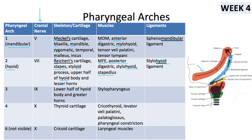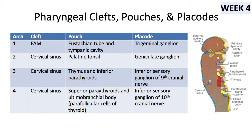For arch three, there's only one muscle to remember, no ligaments, and the skeleton is straightforward: if you know arch two gives the upper half of the hyoid and lesser horns, arch three gives the opposite — lower half and greater horns. There is no persistent fifth arch in humans; it exists only transiently during embryogenesis and then disappears, much like the hypoblast.